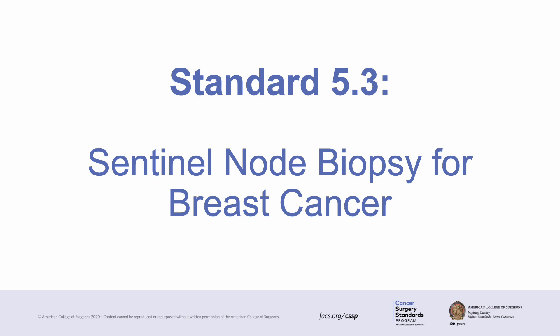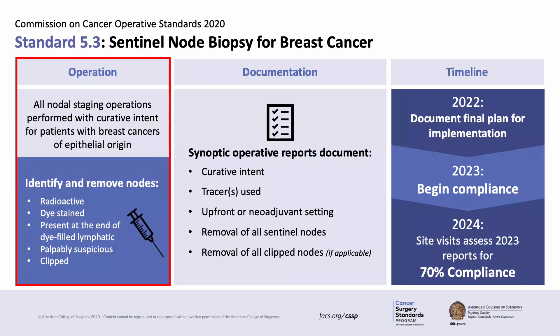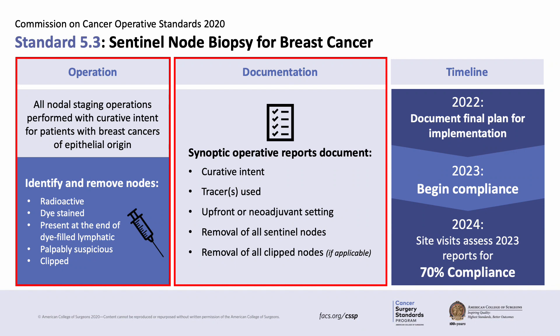We will begin with operative standard 5.3, sentinel lymph node biopsy for breast cancer. There are two components to standard 5.3 that we will discuss in detail. The first occurs in the operating room: all sentinel nodes for breast cancer must be diligently searched for using tracers, palpation, and pre-placed clips when applicable, and must be removed and subjected to pathologic analysis. The second involves appropriate documentation. Operative reports for sentinel lymph node biopsies must include several key elements in synoptic format. Notably, this standard is relevant to procedures being performed with curative intent, as compliance assessment will be conducted only for these cases. Implementation of this standard should be ongoing, and site visits in 2024 will assess the 2023 cases with a goal of at least 70% compliance.